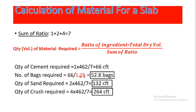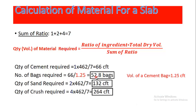To get the number of cement bags, we divide this volume by 1.25, since the volume of one cement bag is 1.25 cubic feet. This gives us 52.8 bags of cement required.